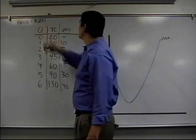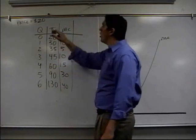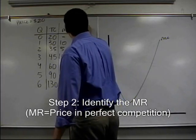Next, it gives me the price of 20, and I've got to produce where MR equals MC. I know the price equals the MR in perfect competition.